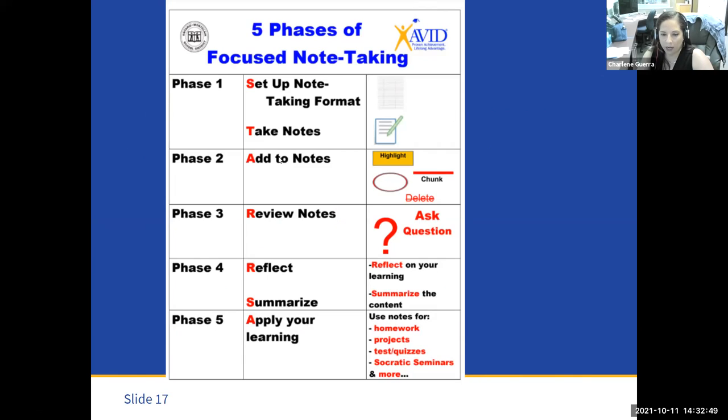If we are scaling back and we are only minimalizing the phases of focused note-taking for this year since we're returning from distance learning, I would definitely say that teachers need to figure out how students will apply the notes, set up the notes, take the notes, and allow students opportunities to add to the notes, and then allow them to apply their notes. So if we don't do all five phases, I would definitely say teachers need from a planning lens to look at phase 5, how will these notes be used?